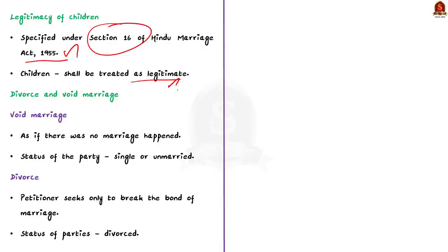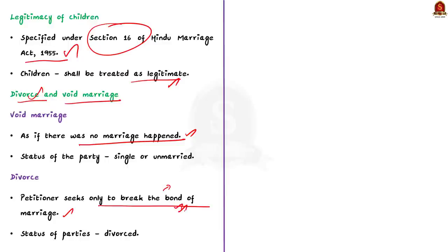There is another concept called divorce. When a marriage is declared void it implies that there was no marriage between the parties in the first place, whereas in case of divorce the petitioners seek to break the bond of marriage. The petitioner does not challenge the marriage itself — they just want to break the bond. Declaring a marriage as void means the marriage was not even valid in the first place, however divorce means the ending of a valid marriage.